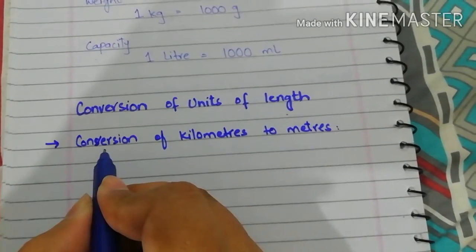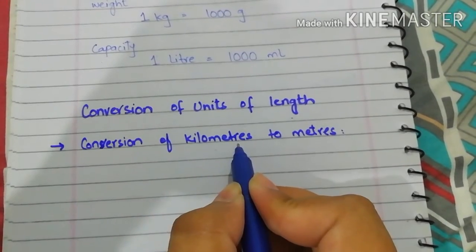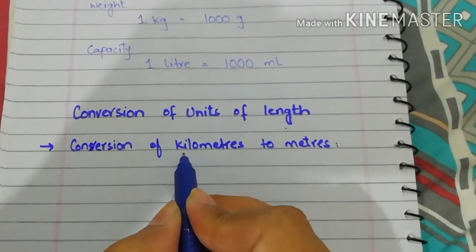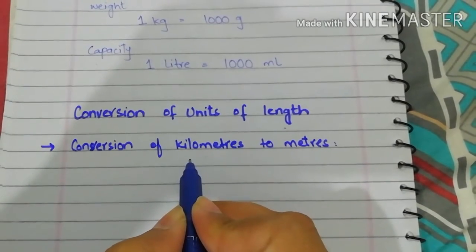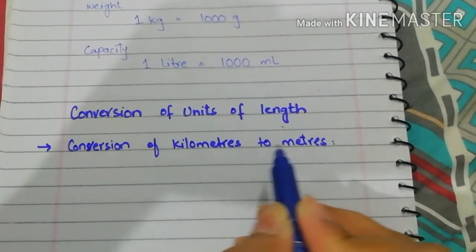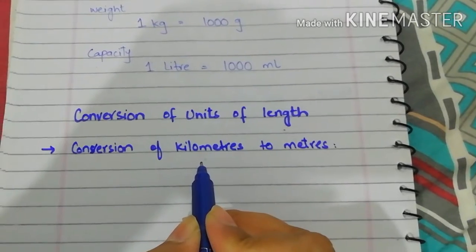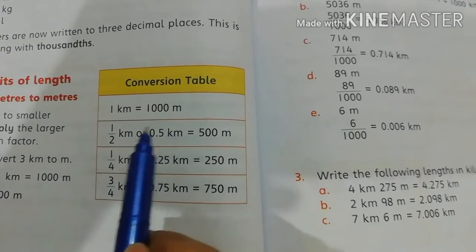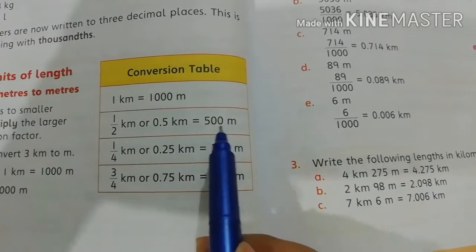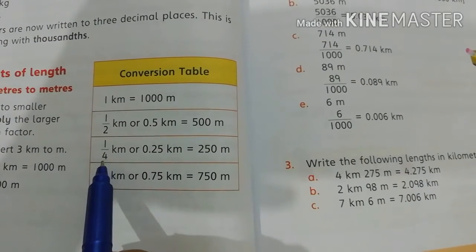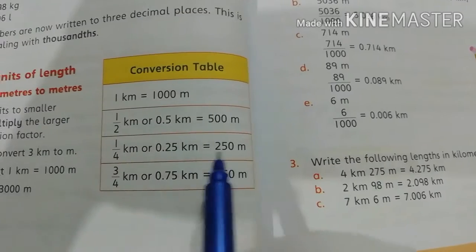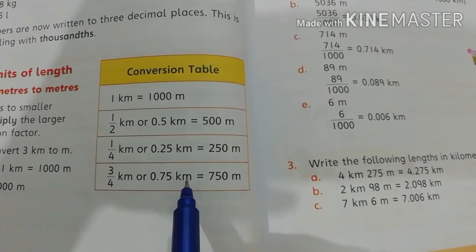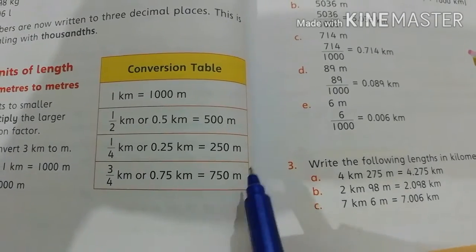Now let's look at the conversion of kilometers to meters. Kilometer is a bigger unit and meter is a smaller unit. Here is the conversion table: one kilometer equals one thousand meters, half kilometer or 0.5 km equals 500 meters, 0.25 km equals 250 meters, and three-quarters or 0.75 km equals 750 meters. Dear students, you have to learn this table.